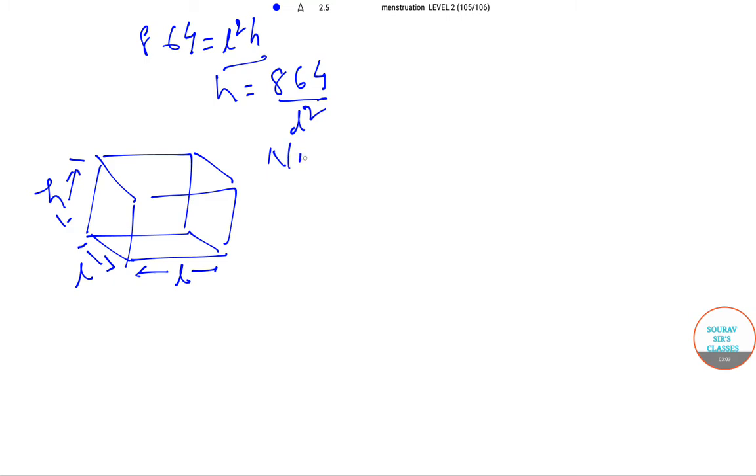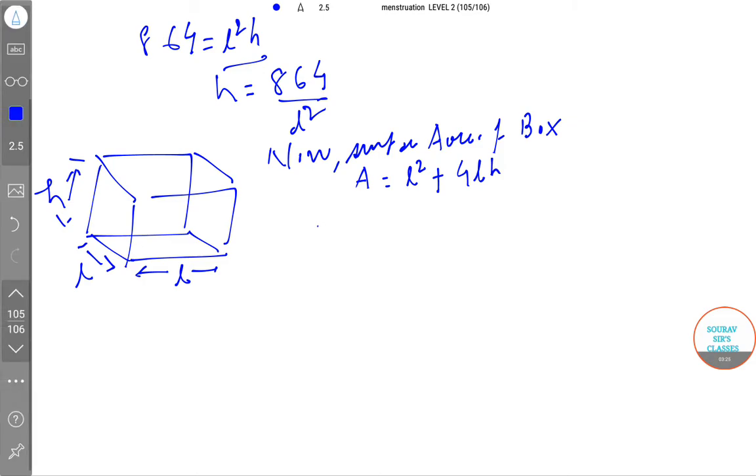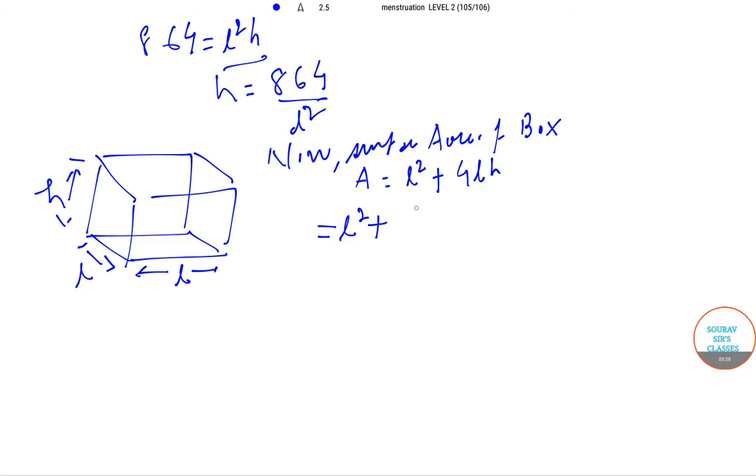Now, surface area of the box A equals L squared plus 4LH. So, A equals L squared plus 4L times H. Substituting H, we get L squared plus 3456 by L.